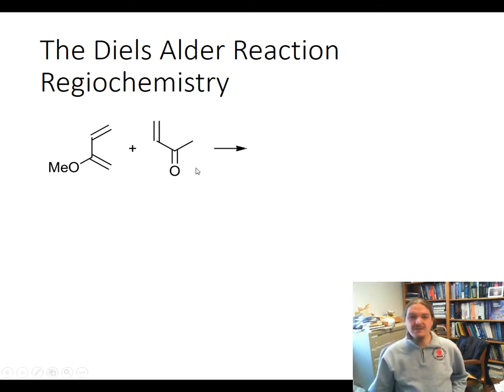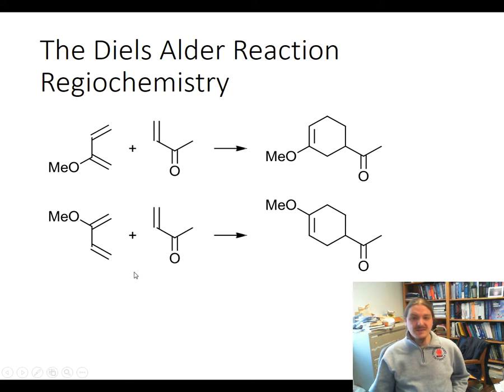If I've drawn the diene and the dienophile this way, it's going to suggest a certain regiochemical outcome in the product, but there's nothing that says that I couldn't have flipped one of those reagents over and suggest a different regiochemical arrangement in the product. And you're always going to end up with a situation like this, where the diene and the dienophile both have one substituent on them. So let's look at two different ways that can be used to determine which one of these is the major product.